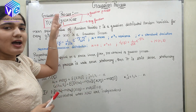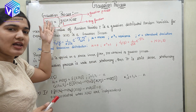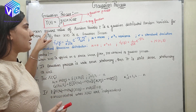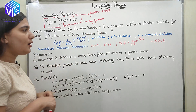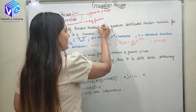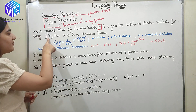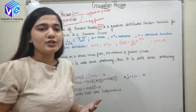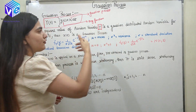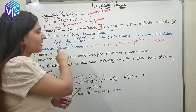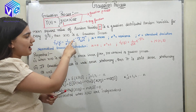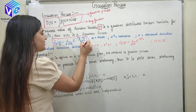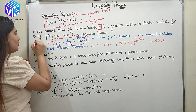For xt to be a Gaussian process, I can take any function, integrate xt over that function, and I will get another function. This function is also following the Gaussian distribution — its mean square value is following the Gaussian distribution. As written here, the mean square value of random variable y is a Gaussian distributed random variable for every gt. I can take any function gt, and then xt is called a Gaussian process.